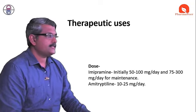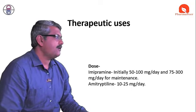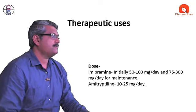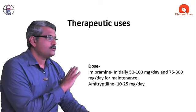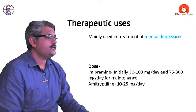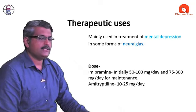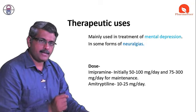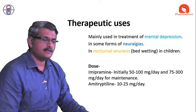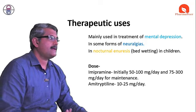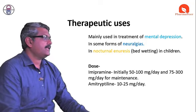Regarding therapeutic applications and dosing: the dose is near about 50 to 100 mg per day, or 75 to 100 mg per day for maintenance. With amitriptyline, the normal dose is 10 to 25 mg per day. Therapeutic applications include treatment of mental depression, some forms of neuralgia (nerve pain), and nocturnal enuresis in children. These apply particularly to tricyclic antidepressants like amitriptyline and imipramine.